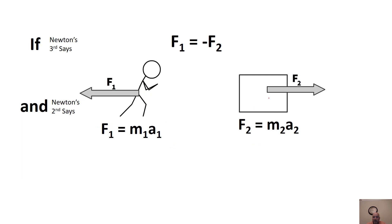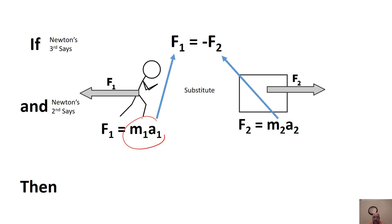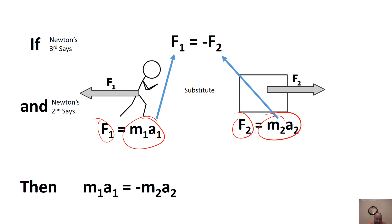We can substitute M1·A1 for F1 and M2·A2 for F2, plugging those into the third-law equation. Substituting gives us: M1·A1 = −M2·A2. The negative is still there because it came directly from substituting F2, which is in the opposite direction.